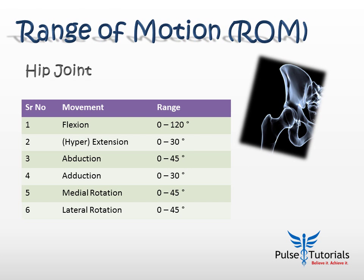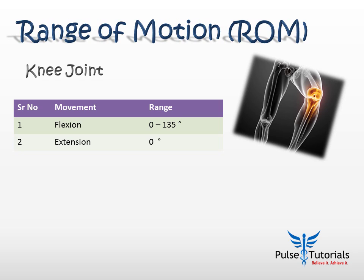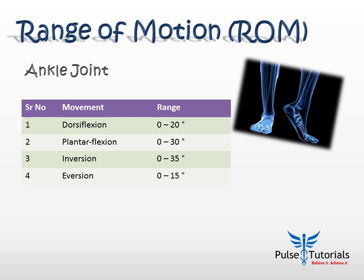The hip joint has six important movements: flexion 0–120°, hyperextension 0–30°, abduction 0–45°, adduction 0–30°, medial rotation 0–45°, and lateral rotation 0–45°. The knee joint has only two movements — flexion and extension. From the standard resting position of a fully extended leg, flexion is 0–135°; no hyperextension is possible at the knee. The ankle joint has four movements: dorsiflexion 0–20°, plantar flexion 0–30°, inversion 0–35°, and eversion 0–15°.